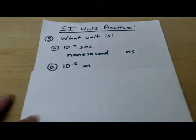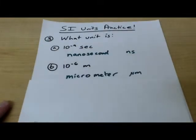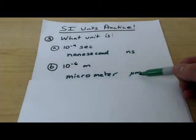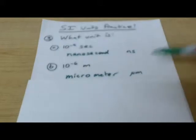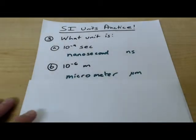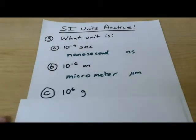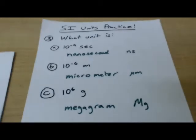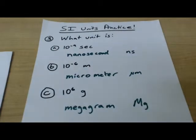How about this one? Ten to the negative six meters. Well, that's going to be a micrometer. And the abbreviation is mu-m. Remember, this is the Greek letter mu. We don't use the letter m because it's already being used for millimeters. And last one of these. Ten to the six grams. Well, that's going to equal a megagram. And megagram is capital M G.